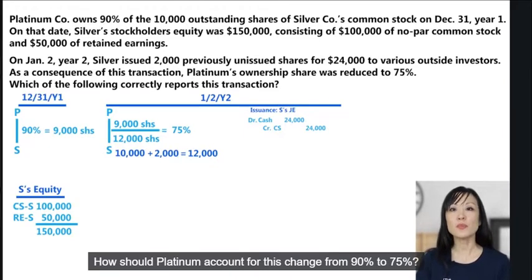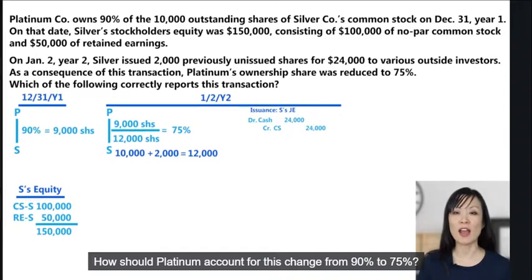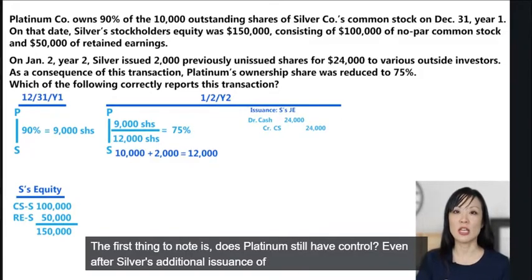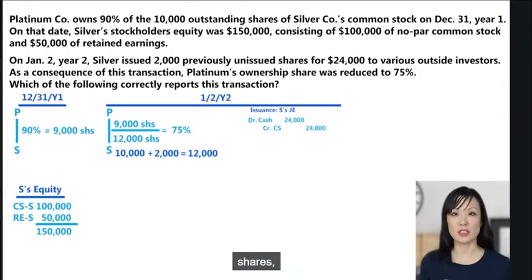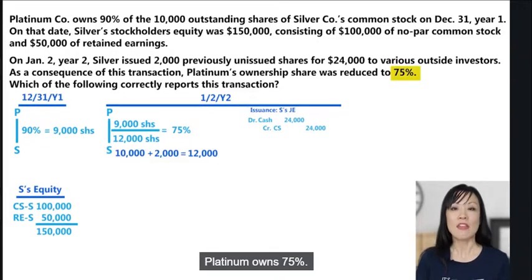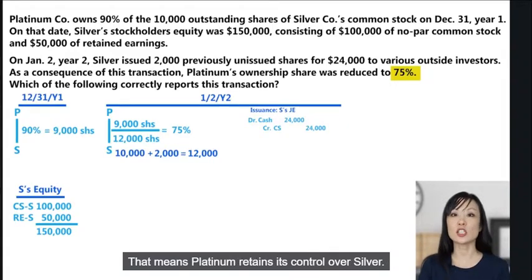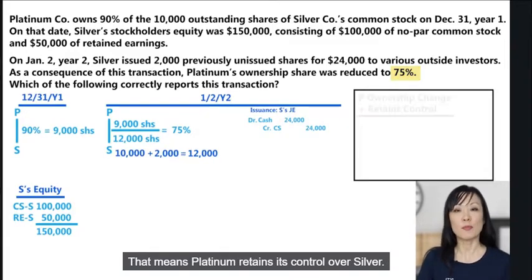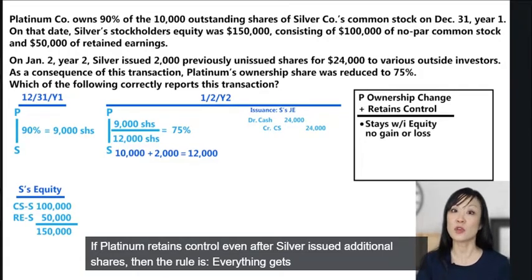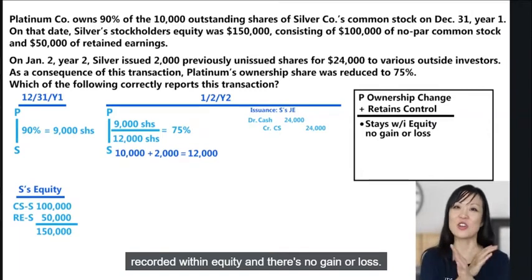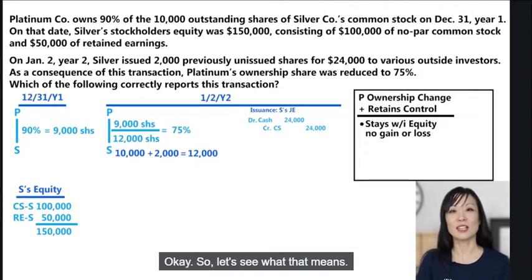How should Platinum account for this change from 90% to 75%? First, does Platinum still have control? Even after Silver's additional issuance, Platinum owns 75%, so it retains control. The rule is: when a parent retains control, everything gets recorded within equity and there is no gain or loss recognized.